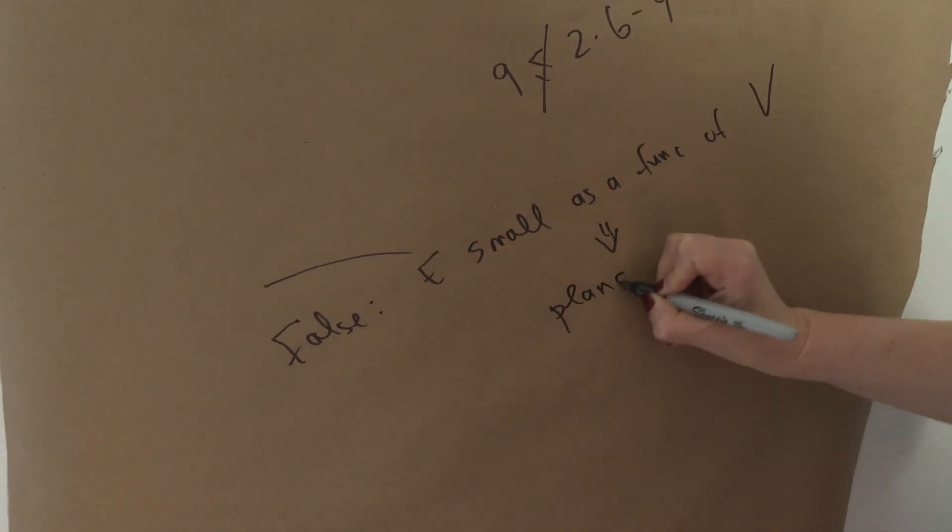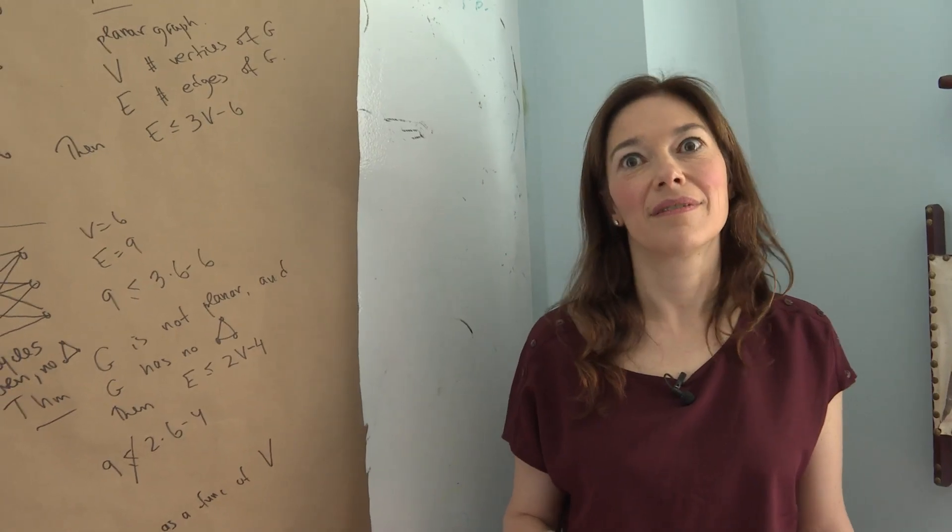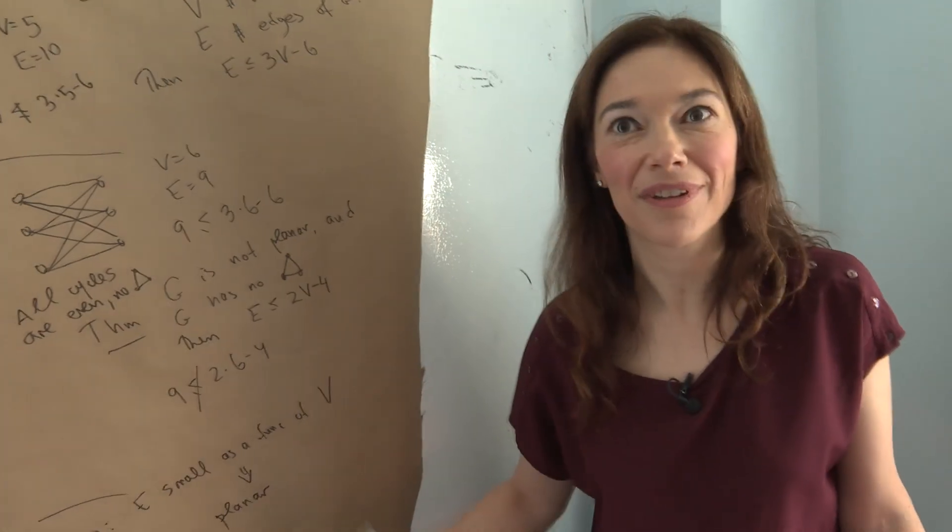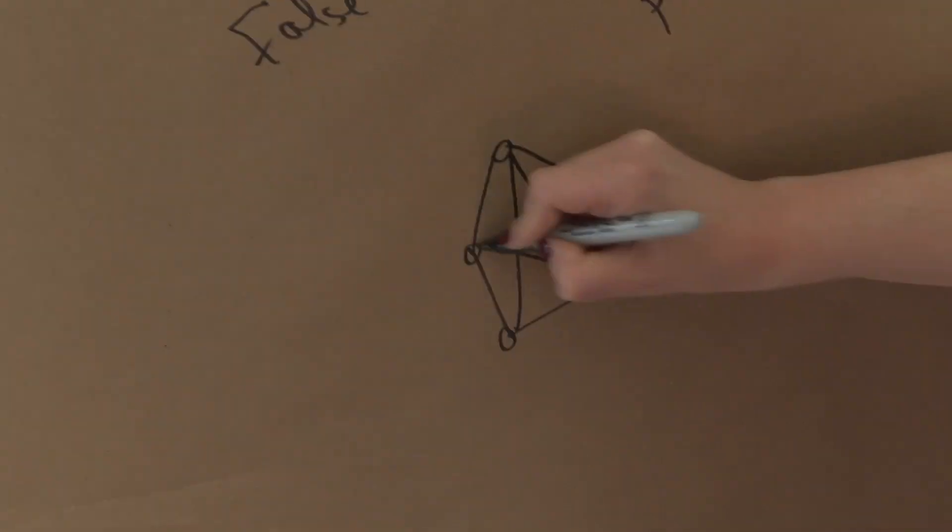But you'd think it would be easier if there were fewer edges, like, or is that not the case? Well, so let me show you an example, and you tell me if it's easier or harder. Start with a K5, which we know is a bad guy. And now draw lots and lots and lots of vertices, just, they're called isolated vertices, that start no edges.